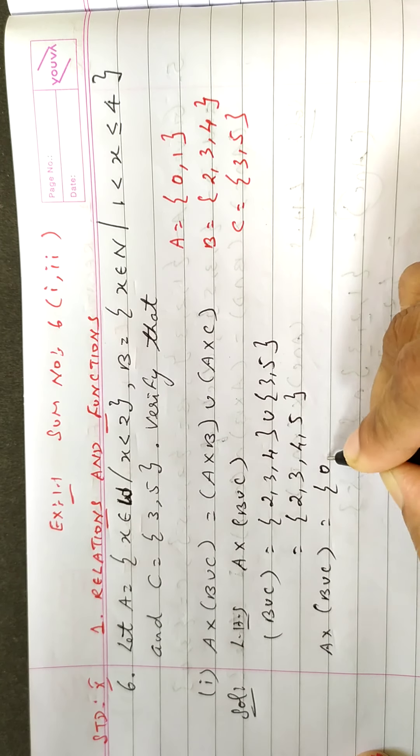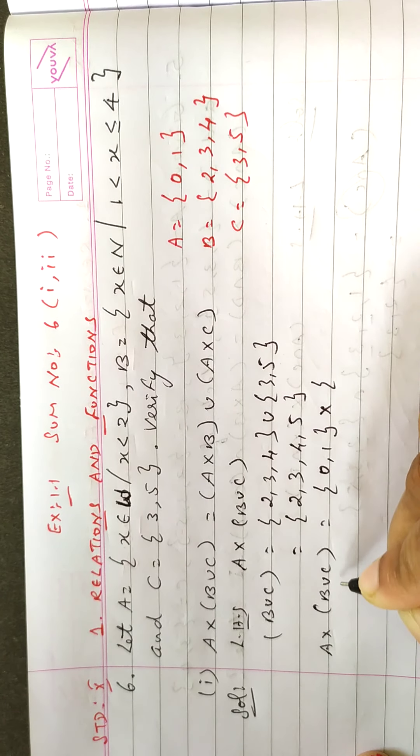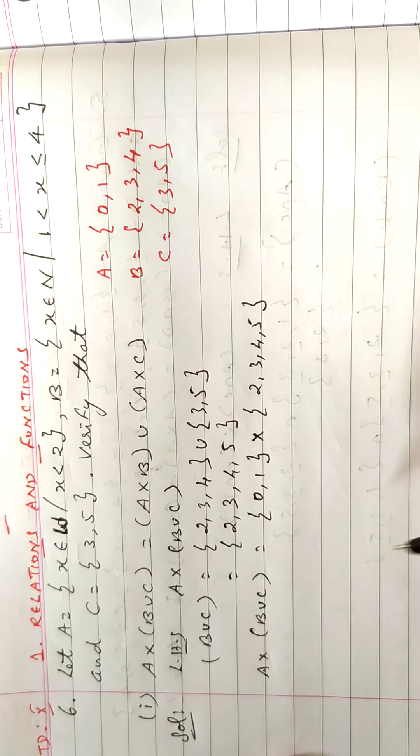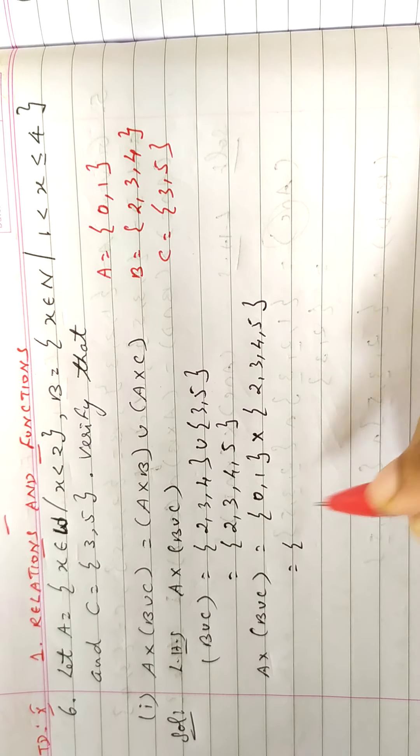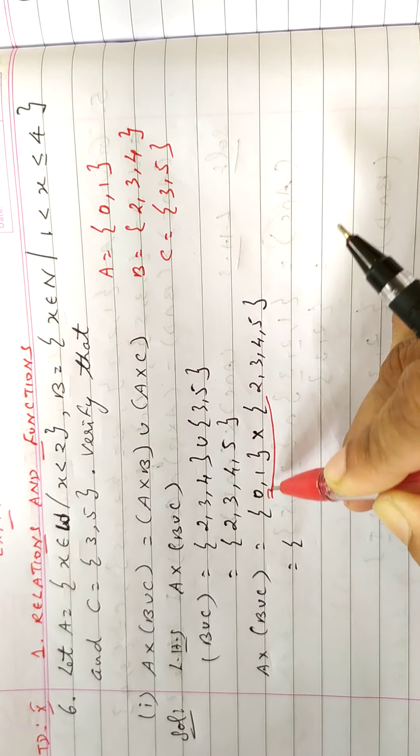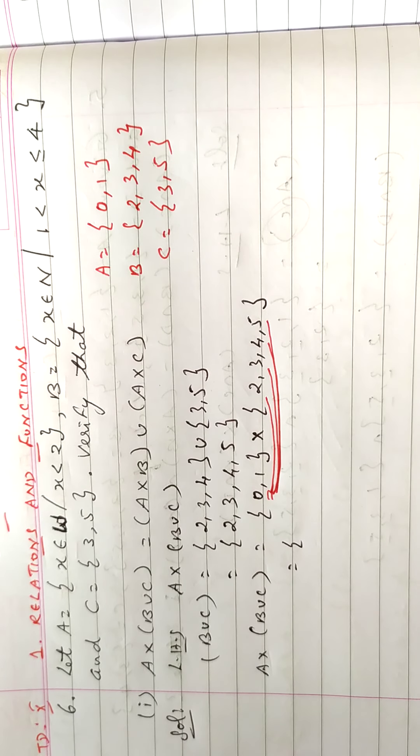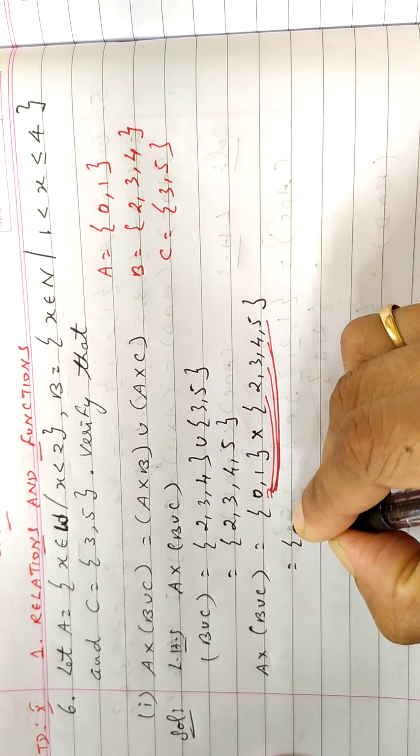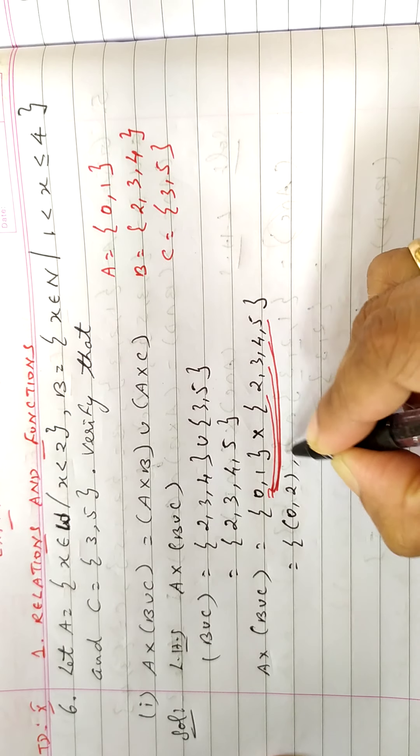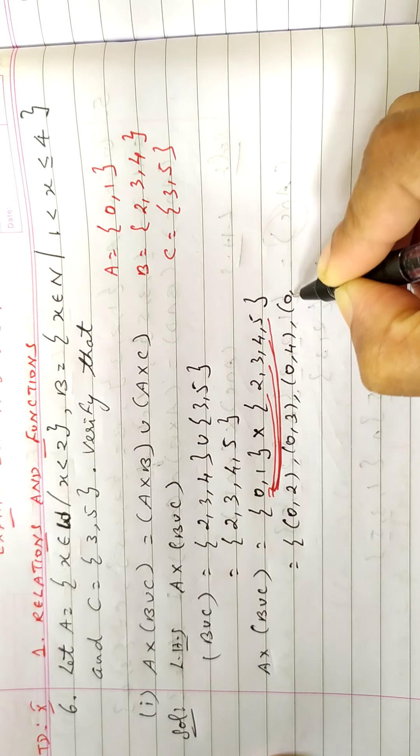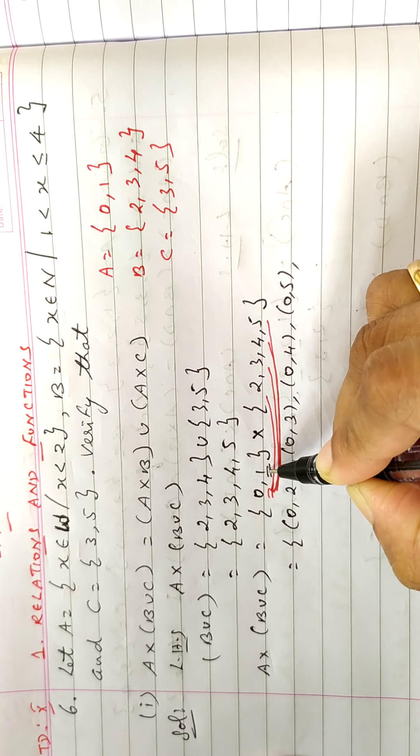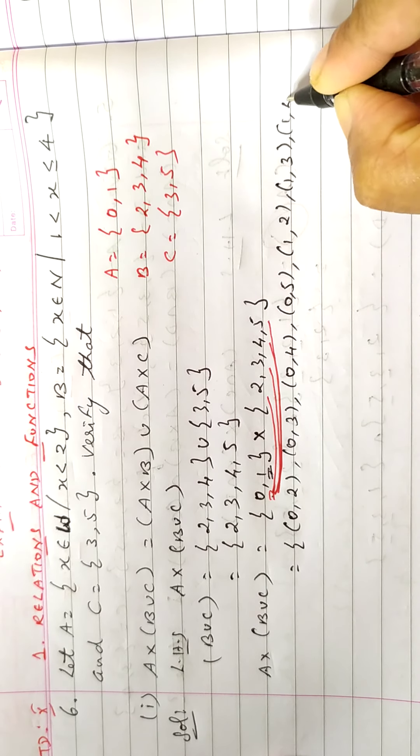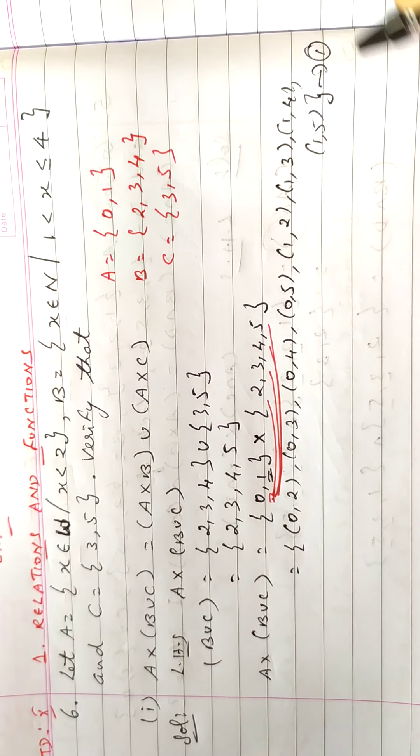Now you find A cross B union C. That is set A, what is set A? 0, 1. Cross product with this set B union C, so that answer is 2, 3, 4, 5. Now we have to find the cross product. You take first element, pair with all the elements of second set. That is 0,2, 0,3, 0,4, 0,5. Then you take the second element, 1,2, 1,3, 1,4, 1,5. So this is the answer, keep this as 1.